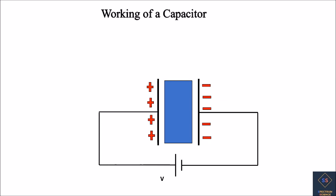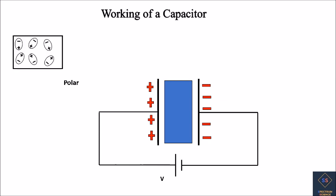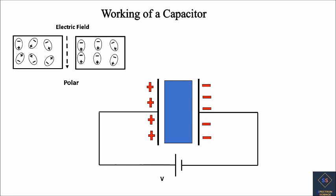Now let us see what happens inside the dielectric. The dielectric is a polar molecule — that is, it has a dipole even in the absence of an electric field. When these molecules experience an electric field, the dipoles get aligned in the direction of the electric field. Because of that, there is a net accumulation of positive charge at the bottom of the dielectric and negative charge at the top, so the electric field inside the dielectric is from bottom to top — that is, in the opposite direction of the external applied electric field.